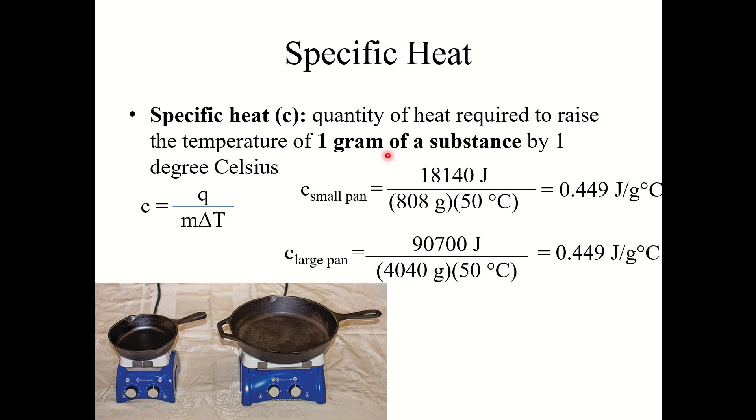Next is specific heat, and this uses a lowercase c. This is the quantity of heat required to raise the temperature of one gram of a substance by one degree Celsius. So this is an intensive property. The amount of matter you have doesn't make a difference. So this is calculated by taking heat divided by m times delta t.